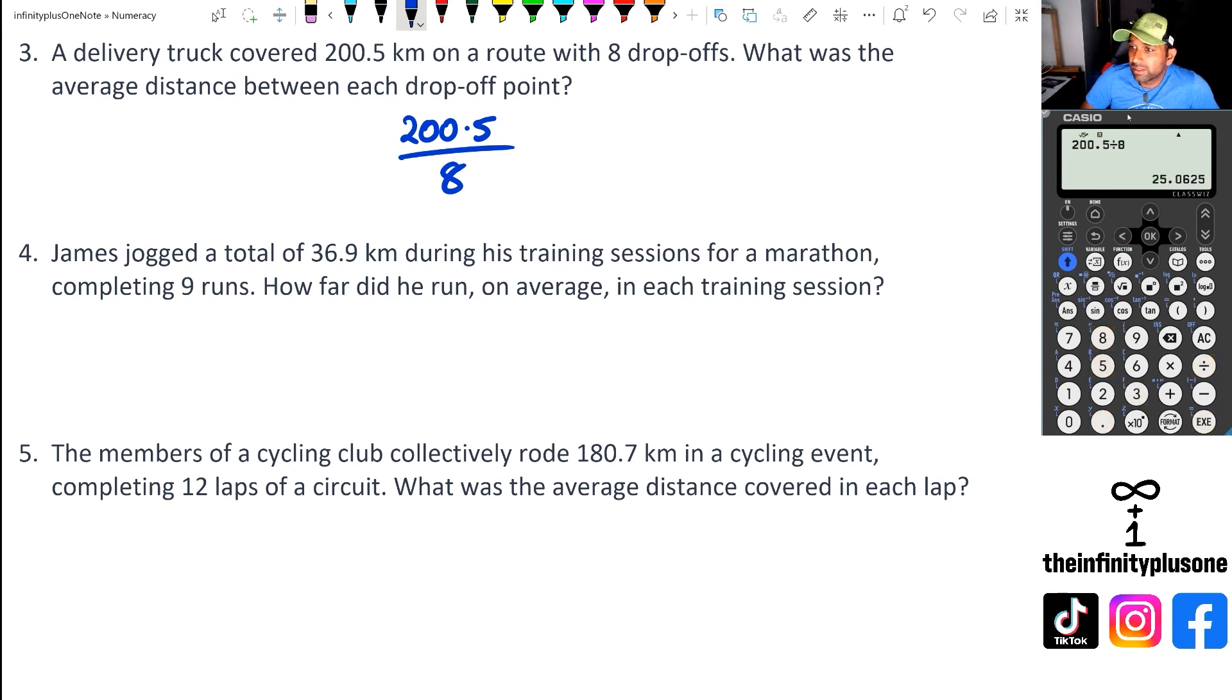Now, here is where things get interesting. We've got kilometers, so if it's kilometers, then we need to go up to three decimal places. That's because 1000 meters is one kilometer. So in this case, we are going to go with 25.063 kilometers.